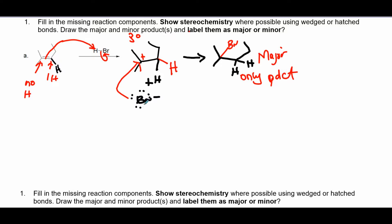The bromide that left will come back to attack the positively charged carbon because it has electrons to give — opposite charges attract. The bromide acts as a nucleophile because it loves the nucleus, which is positively charged. The carbocation is an electrophile because it loves to receive electrons. The bromide donates electrons, forming a bond — a bond is two electrons — and that's the only product.